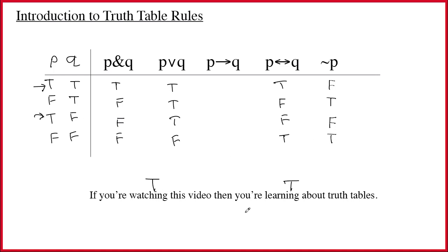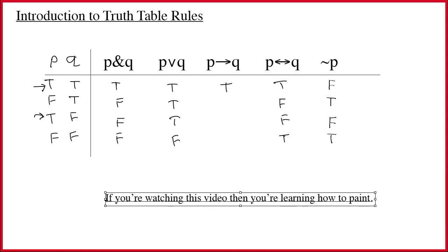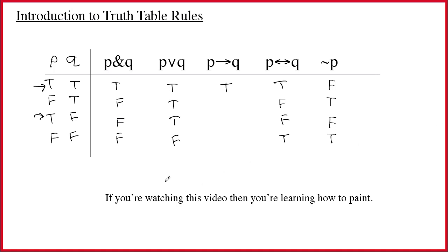Now let's look at true arrow false: 'If you're watching this video, then you're learning how to paint.' Well, it's true that you're watching the video, but it is false that you're learning how to paint — if anything, you're learning how not to paint. This is clearly an instance of a true arrow false sentence, and its value is false. I hope that felt fairly intuitive.